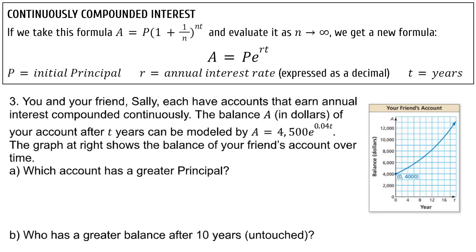You and your friend Sally each have accounts that earn annual interest compounded continuously. The balance A in dollars of your account after t years can be modeled by A = 4500e^(0.04t). The graph at right shows the balance of your friend's account over time. Which account has greater principal? The initial value put into the account.